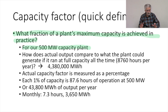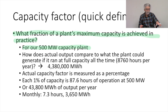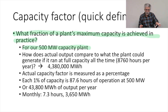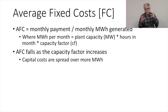Now that we understand capacity factors, we'll often use capacity factor as a measure of the output of the power plant. Sometimes we'll talk about output in terms of megawatt hours, and sometimes in terms of the capacity factor of the power plant, depending on which way seems most useful. For a given size power plant, those two measures are related to each other in a way we can easily figure out.